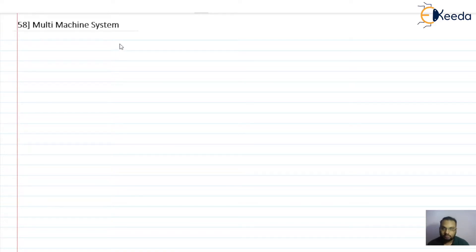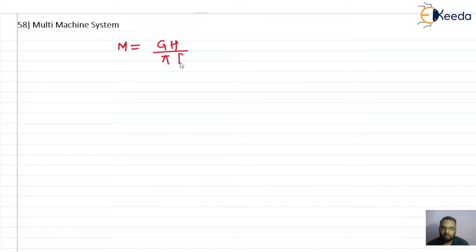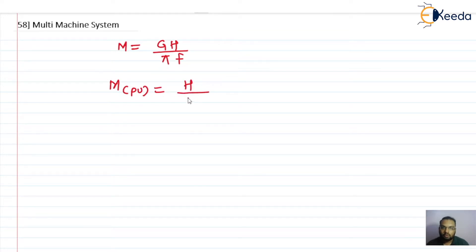From the rotor dynamics we got the inertia constant M in terms of GH divided by πf, and we also got M in per unit as H divided by πf.